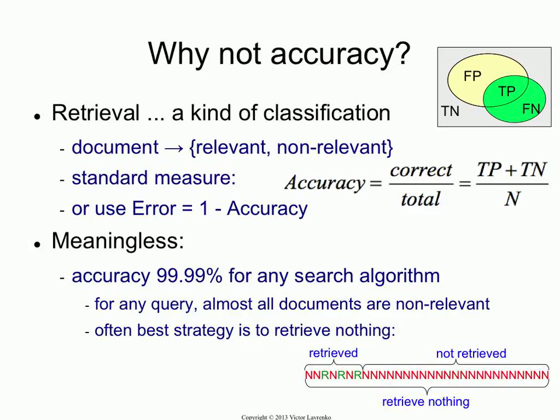Which one of these two strategies has higher accuracy? If you count the errors: the retrieve-nothing system made three errors — every relevant document it should have retrieved but didn't. This other strategy retrieves all of the relevant ones but also happens to retrieve four non-relevant ones. So the total number of errors in the top strategy is four, and the bottom strategy is three. So according to accuracy, the retrieve-nothing system is better — and which system would you prefer as the user?